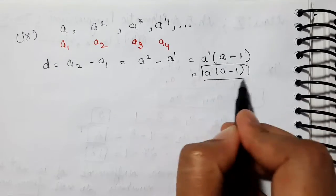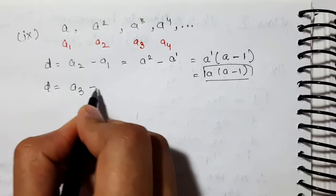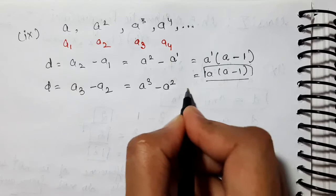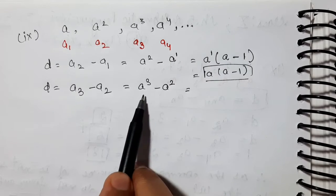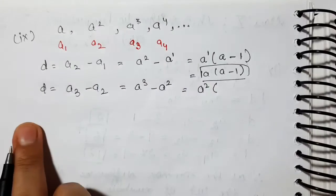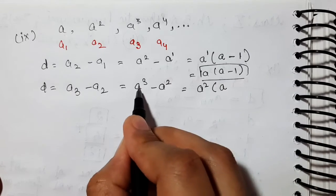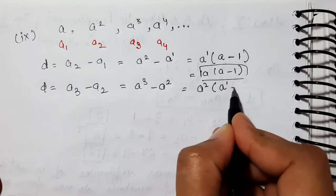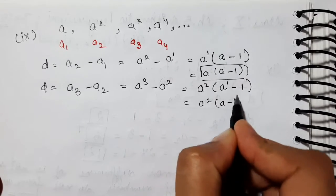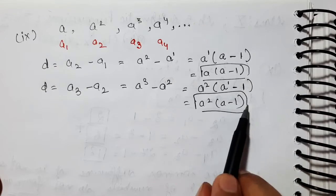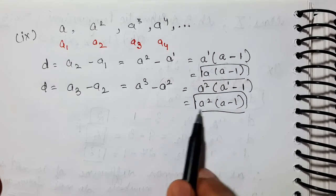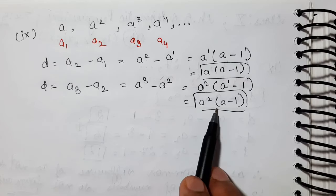So in the first case, D = A(A - 1). Now checking A3 minus A2: A³ minus A². Taking A² as common (the smaller power), we get A²(A - 1). These two common differences — A(A−1) and A²(A−1) — are not equal; the terms vary.